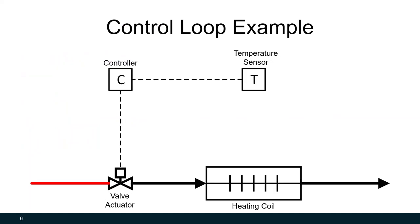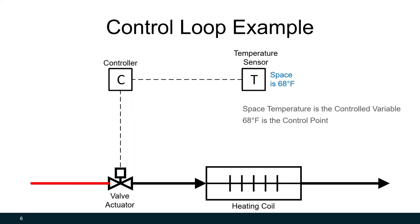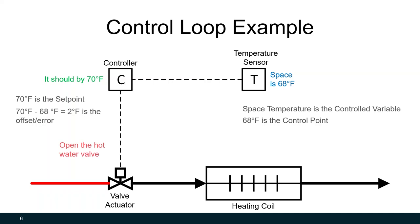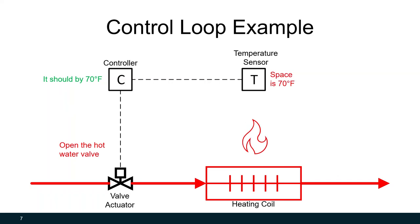Here we have a hot water coil that's heating a room. The temperature sensor detects that the space is at 68 degrees. Because the heating coil is heating the room, our controlled variable is space temperature, and 68 degrees is the current control point. That sensor sends an input signal to the controller, which compares it to its set point — currently set at 70 degrees. The difference is a 2-degree error. The controller is programmed to react to this 2-degree error and sends an output to the hot water valve to open, allowing hot water to flow to the heating coil and heat the space, until the space gets to 70 degrees.